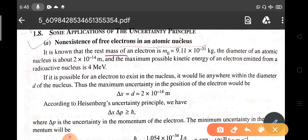We know that the rest mass of an electron m₀ is 9.11 × 10⁻³¹ kg and the diameter of an atomic nucleus is about 2 × 10⁻¹⁴ m. In an interview, you can roughly write this as 10⁻¹⁴ meter or 10⁻¹⁵ meter, and write m₀ accurately.